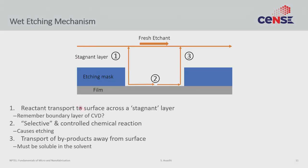To some extent, I discussed this in the previous lecture, but this is a prototypical wet etching reaction. What is happening is you have a film, you have an etching mask. This can be photoresist or it can be a hard mask, that does not really matter. Now, in order to do the etching, three things must happen. You must have an etchant and that etchant is probably there in the bulk of the solution and it possibly, due to agitation or due to flow, there is some churn there. That is what this arrow represents.